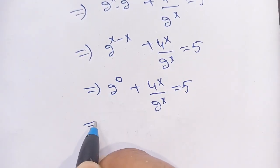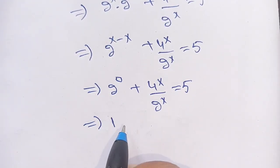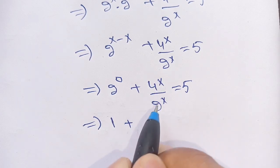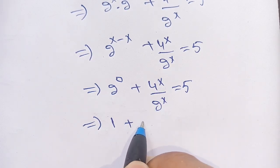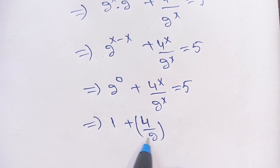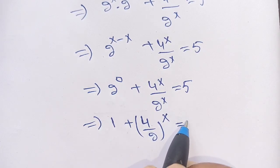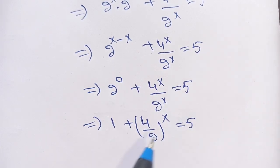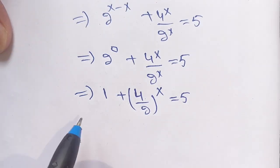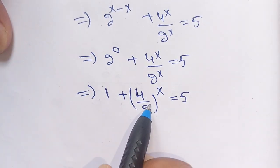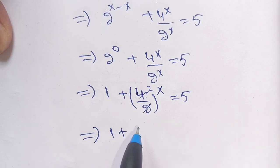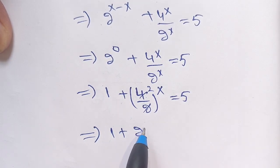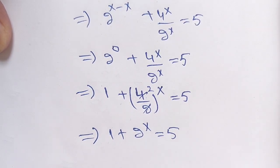Now, 2^0 is equal to 1, plus 4^x divided by 2^x, which can be written as (4/2)^x, is equal to 5. Since 4 equals 2 times 2, this becomes 1 plus 2^x is equal to 5.